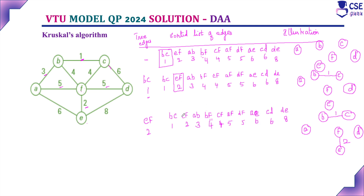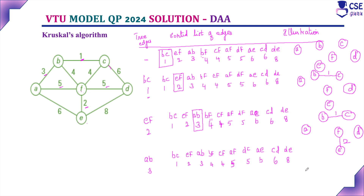Next, consider edge AB with weight 3. If you include this edge, check whether it forms a cycle. It does not form any cycle, so we can include edge AB with weight 3. The graph now has edges BC with weight 1, EF with weight 2, and AB with weight 3.